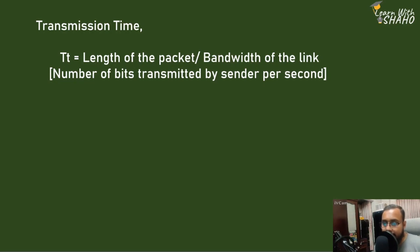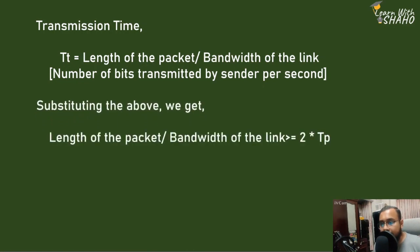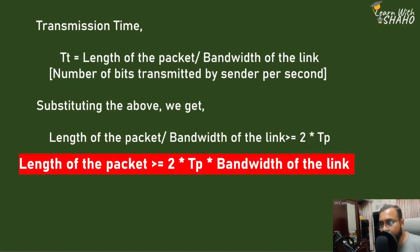Substituting, we get: length of the packet divided by the bandwidth of the link must be greater than or equal to 2 × TP × bandwidth of the link. Therefore, the minimum length of the packet that can be sent on a link, if there is a collision, equals 2 × TP × bandwidth.